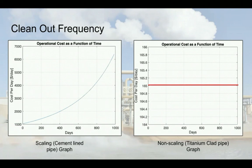Using this growth rate model, we were able to calculate how the operational expense increases with time. On the left-hand side, you can see the operational expense of the cement-lined carbon steel spool increasing exponentially as time goes on. On the right-hand side, you can see the non-scaling titanium-clad pipeline having a constant operational expense as time goes on. Next, Travis will be discussing the clean-out frequency of the injection pipeline.